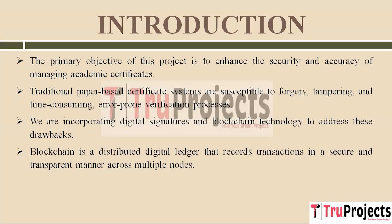Digital signatures are unique electronic fingerprints for certificates, created using the certificate's content and a secret key. They provide certificate authenticity — that is, they help prove certificates are real. Blockchain is like a super secure database that acts like a digital ledger, recording transactions securely and transparently. Instead of storing all data in one place, blockchain stores records as blocks of data, each with a unique code called a hash, distributed across multiple computers or nodes.